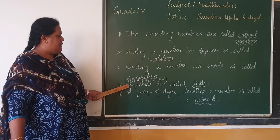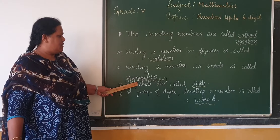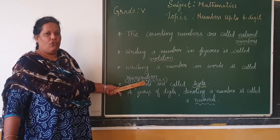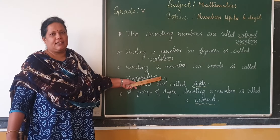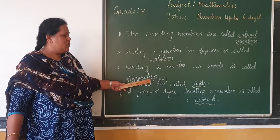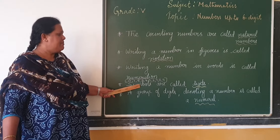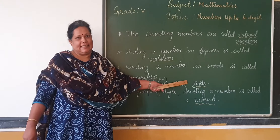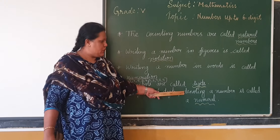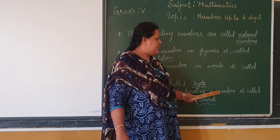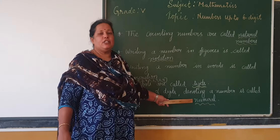Here you can see 0, 1, 2, 3, 4, 5, 6, 7, 8 and 9. These show symbols. Symbols called a group of digits. A number is called a numeral.